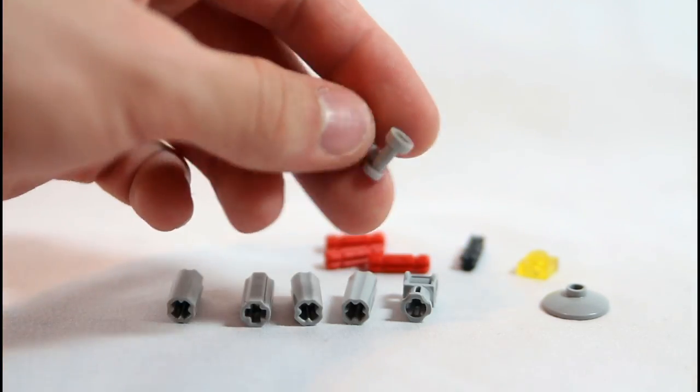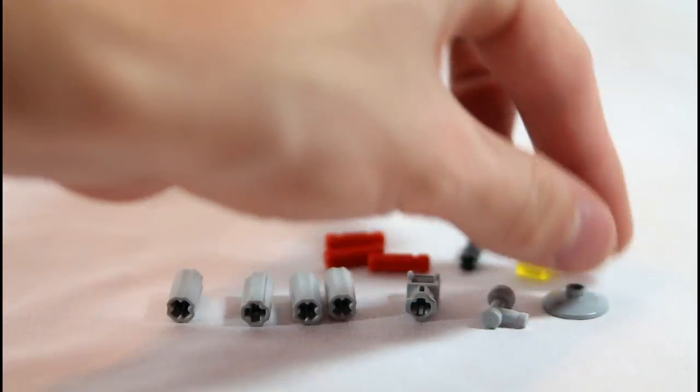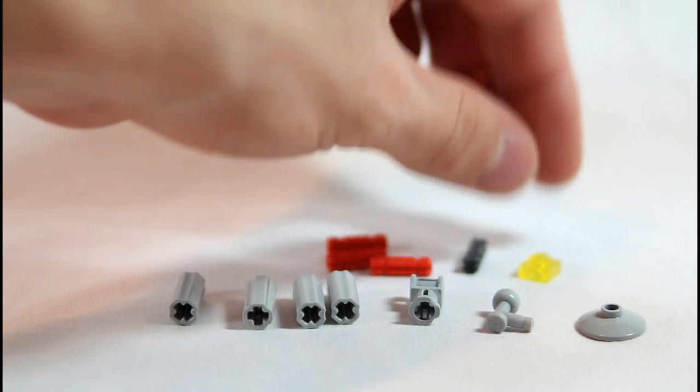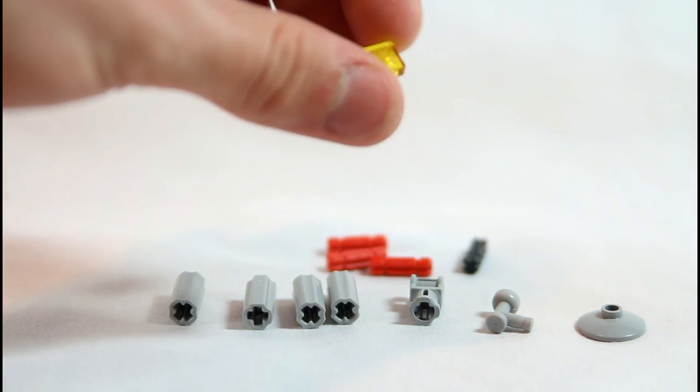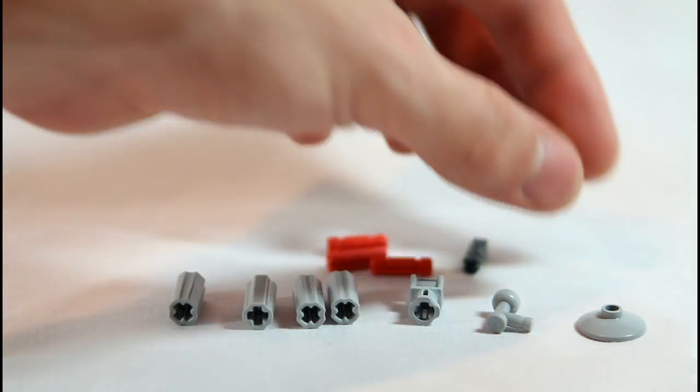One of these tap pieces, a dish, a one by one trans—I prefer trans yellow, but you can really use any trans color plate—and this will be your light.